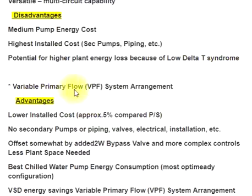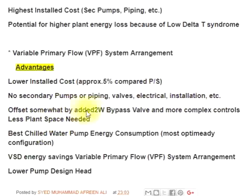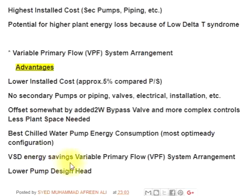Variable Primary Flow (VPF) system arrangement advantages: lower installed cost, approximately 0.5% compared to primary-secondary — no secondary pumps or piping, valves, electrical installation, etc. — offset somewhat by added two-way bypass valve and more complex controls. Less plant space needed, best chilled water pump energy consumption, most up-to-date VPF configuration with VSD energy savings, and lower pump design head.